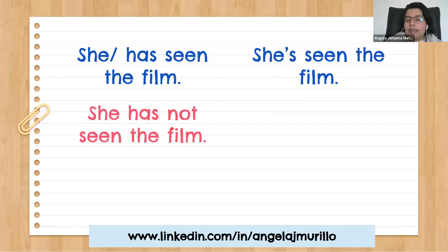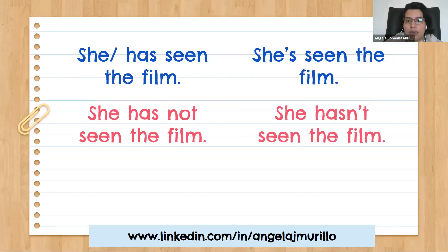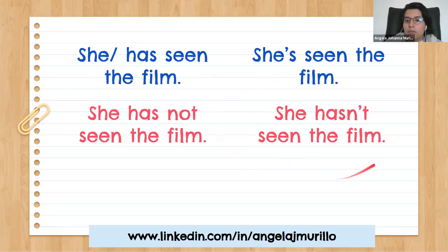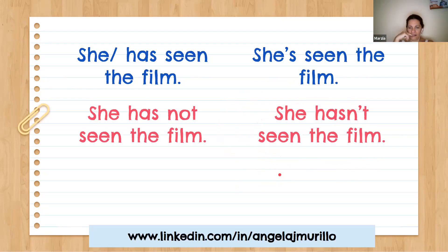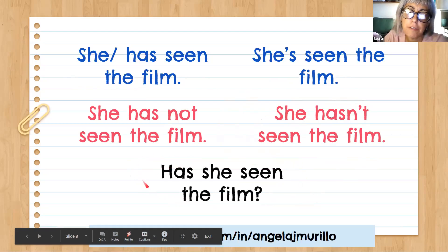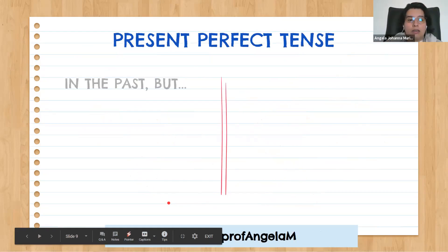The same formula applies in the third person for negative and interrogative. Negative: 'She has not seen the film' — short form: 'She hasn't seen the film.' Don't forget the apostrophe goes between the 'n' and the 't.' Question form: 'Has she seen the film?' It's exactly the same structure.